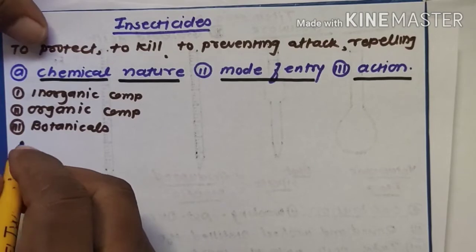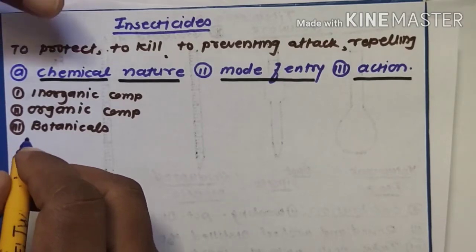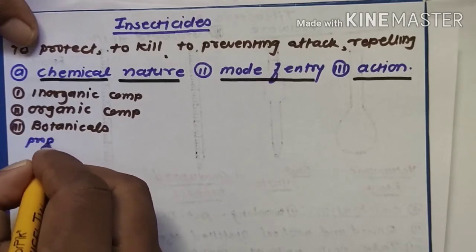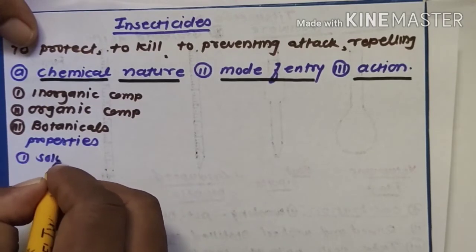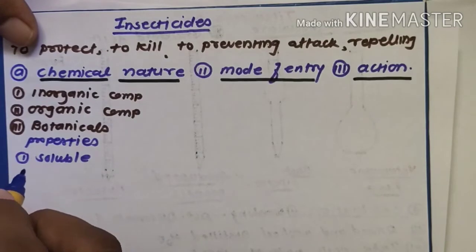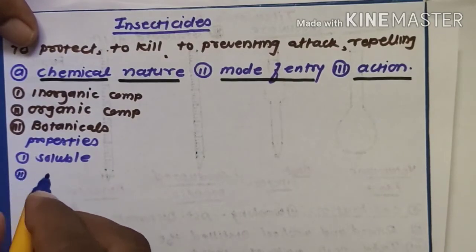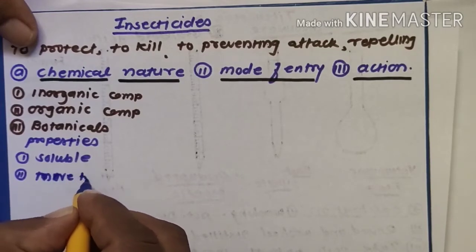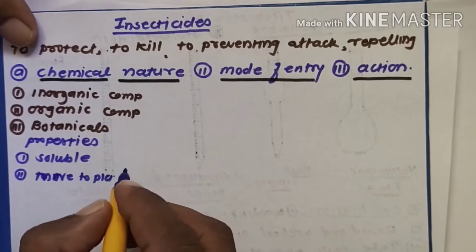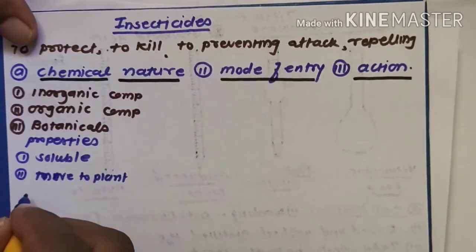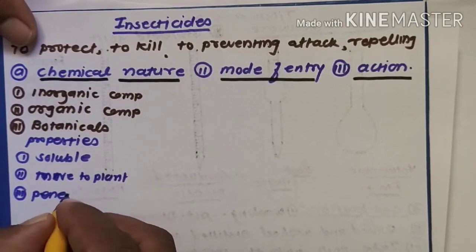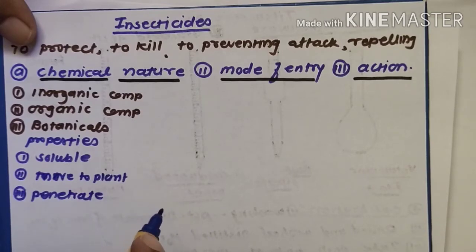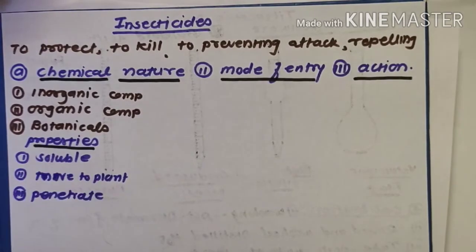The important properties of insecticides based on chemical nature are: first, the compound should be soluble. Second, it should be able to move to the plant and penetrate through the root, stem, and leaves. These are the important properties of any pesticide.